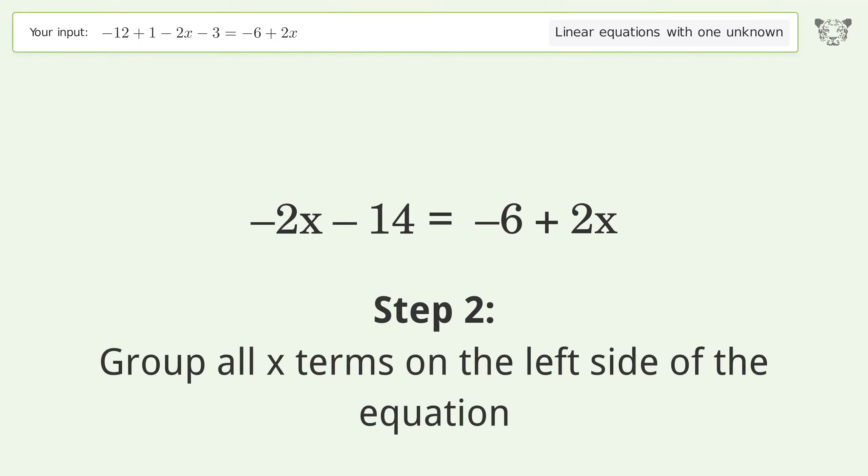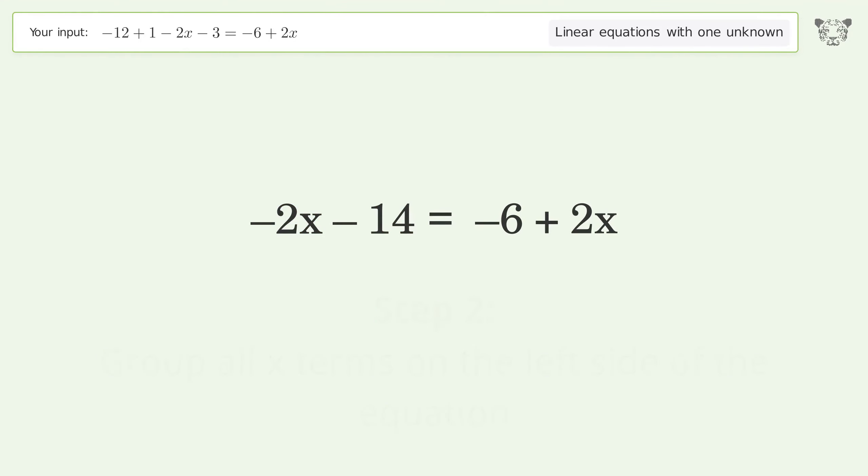Group all x terms on the left side of the equation. Subtract 2x from both sides. Group like terms, simplify the arithmetic.